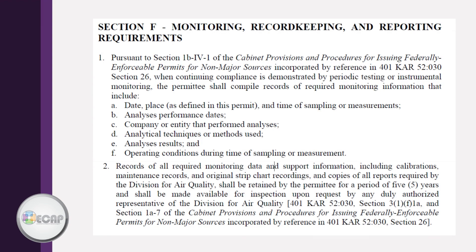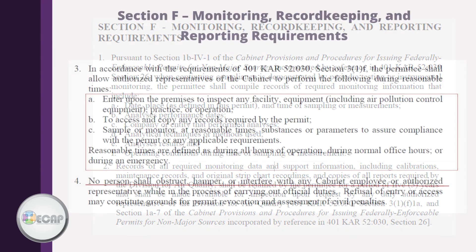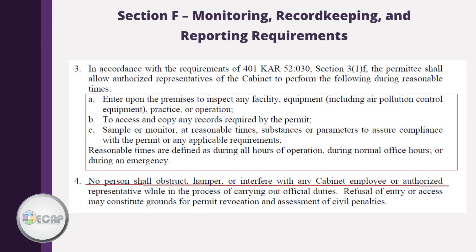Section F is also very important. It tells what the facility needs to record if and when testing is required. Please note that all records must be kept on site for five years. In addition, Section F gives the requirements associated with allowing members of the Energy and Environment Cabinet to complete inspections, request records, or sample or monitor substances or parameters to assure compliance with permit requirements. In essence, it says no one shall prohibit the Cabinet from performing required duties within reasonable times.